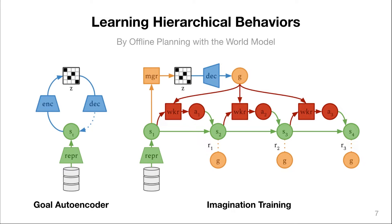Given the world model, Director learns hierarchical behaviors by offline planning with the model, from imagined rollouts that are predicted forward with the model and start at states from the replay buffer. Director uses three components for that: a goal autoencoder, a high-level manager policy, and a low-level worker policy.